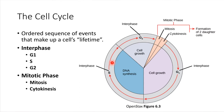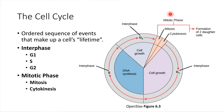Then the cell continues on and there's another gap phase, G2, so more cell growth takes place. Finally at this point the cell is actually ready to divide. After this line right here, this is the end of interphase. After this would come the division phase, and that's called the mitotic phase.